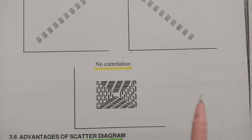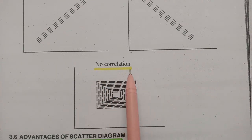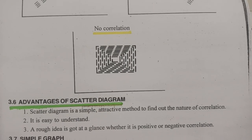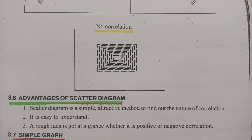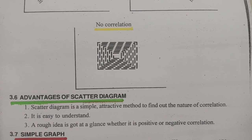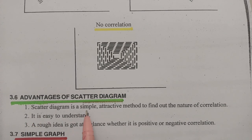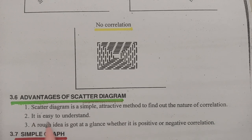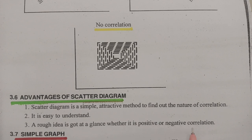This one shows there is no correlation between the variables. The advantages of the scatter diagram are: scatter diagrams are simple and attractive methods to find out the nature of the correlation, they are easy to understand, and a rough idea is obtained at a glance whether the correlation is positive or negative.